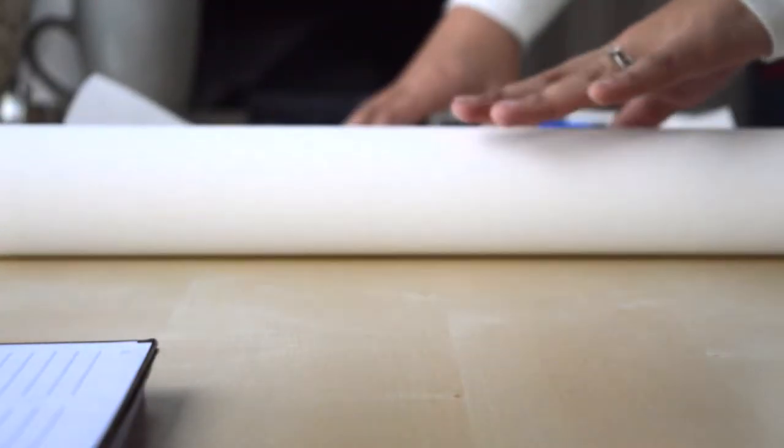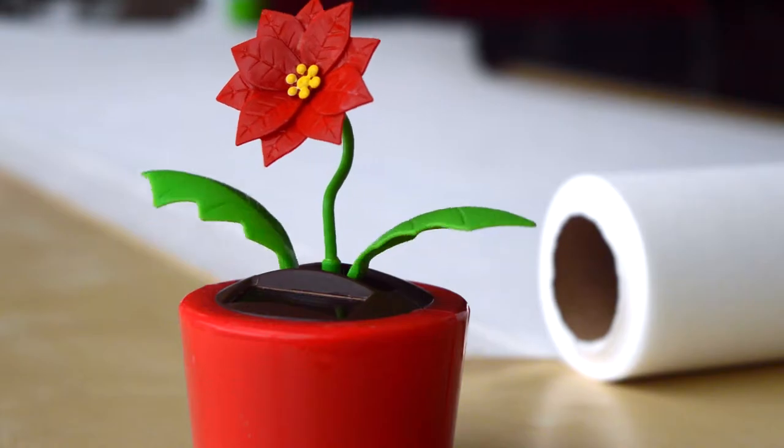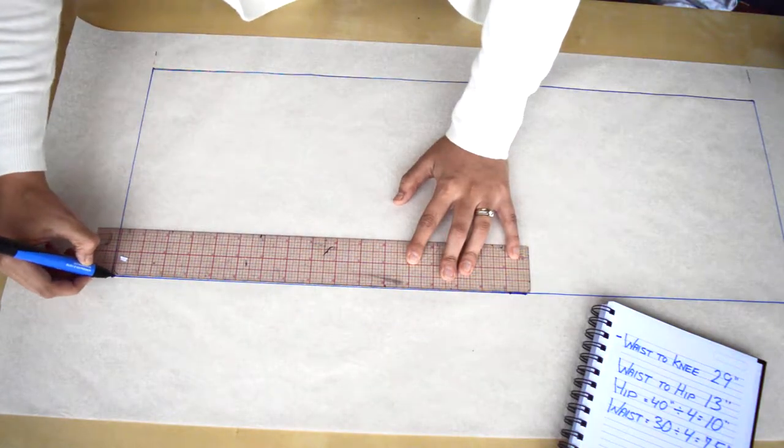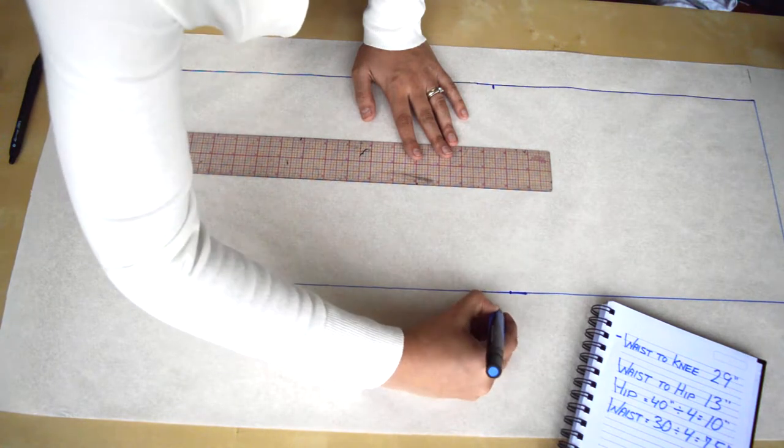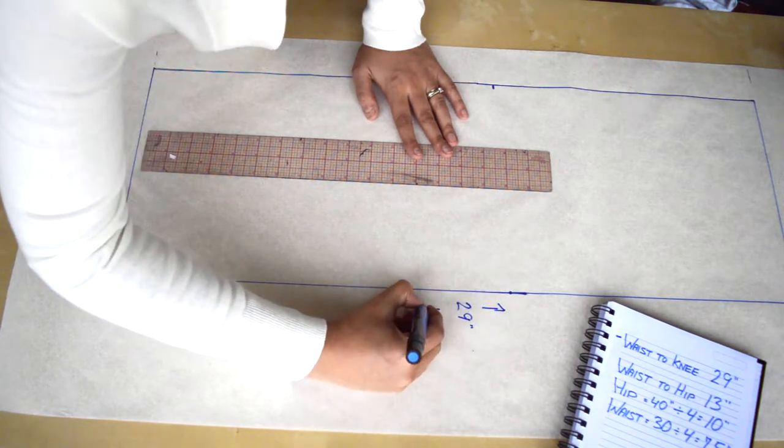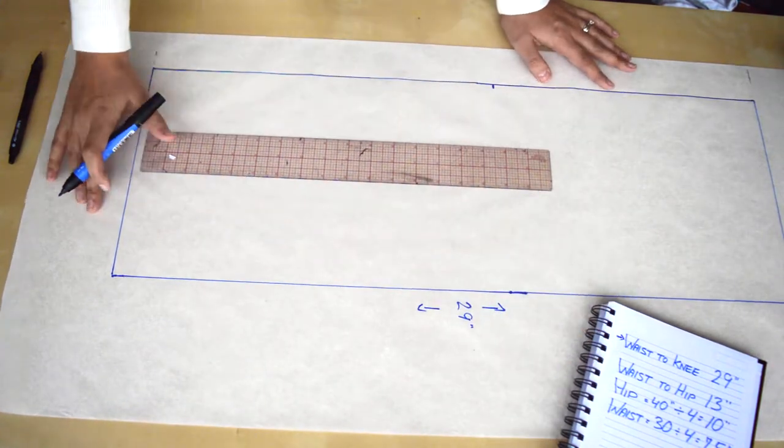So now I'm just going to get everything laid out and let's start drafting. To start this draft, I'm going to draw a rectangle 29 inches long which is my waist to knee measurement, and the width is going to be my hip measurement divided into four which is 10 inches.